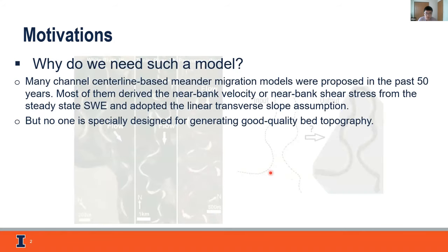Why do we need such a model? Many channel centerline-based meandering migration models were proposed in the past 50 years. Most of them derived the near-bank shear stress or velocity from the steady state shallow water equations in the intrinsic coordinate system, and they adopted the linear transverse slope assumption. But no one is specially designed for generating good quality bed topography.